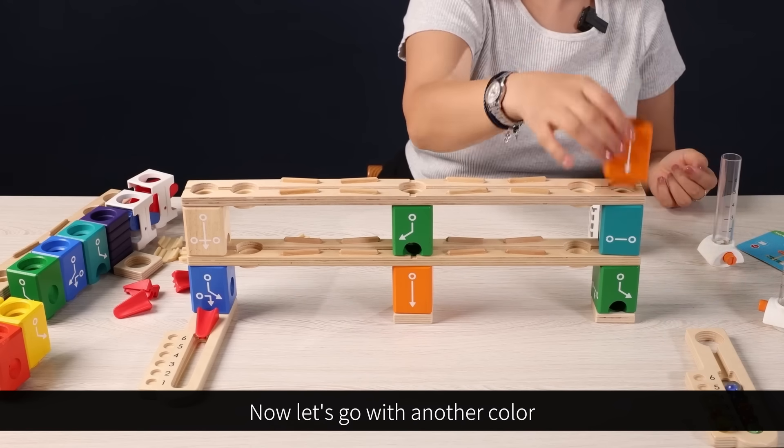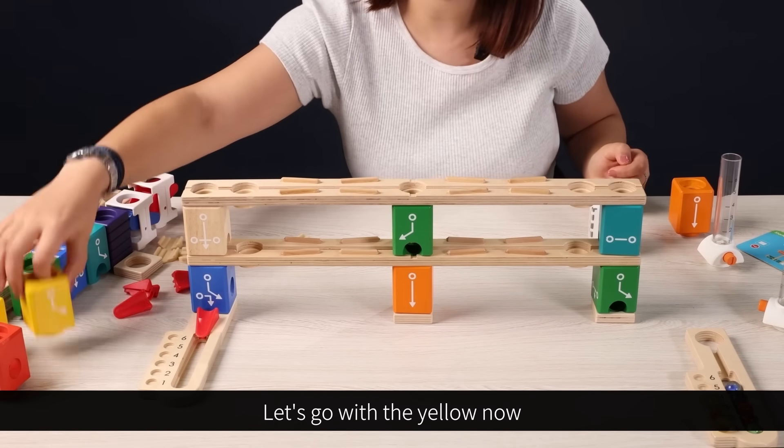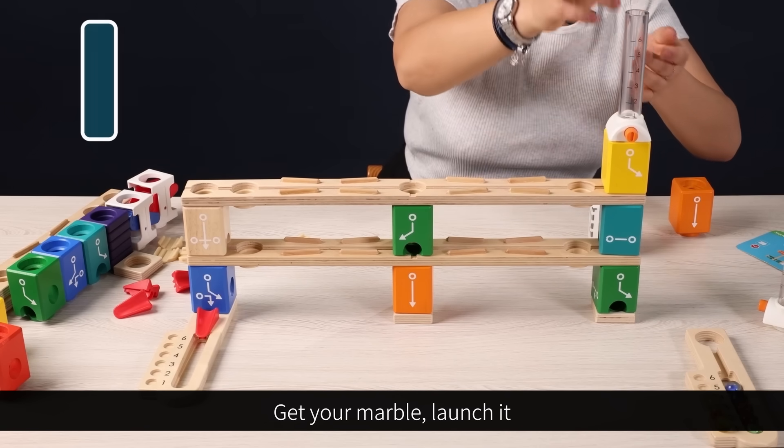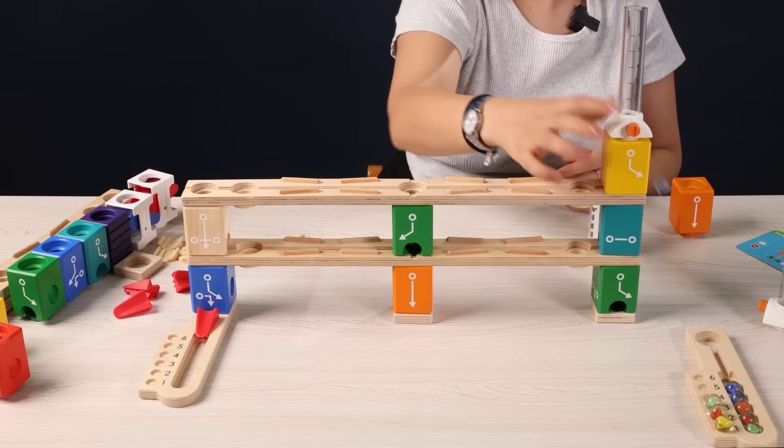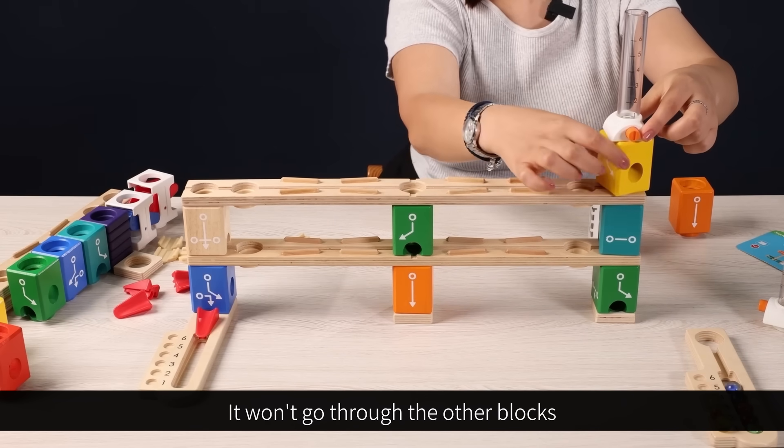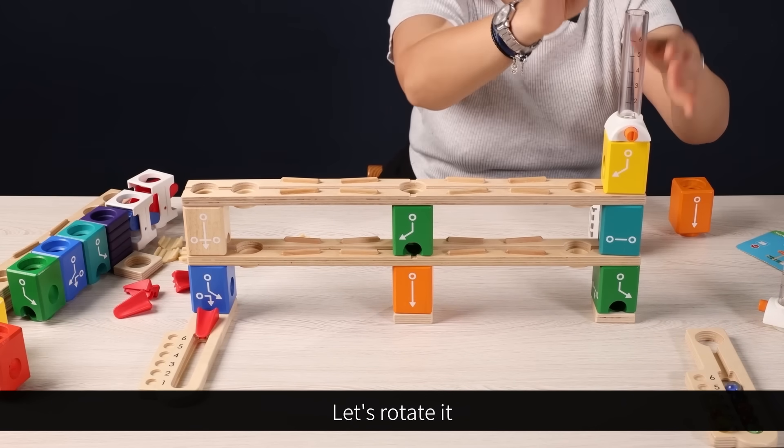Now, let's go with another color. Let's go with yellow now. Get your marble, launch it. Oh no, if it's on the right side, it won't go through the other blocks. Let's rotate it.